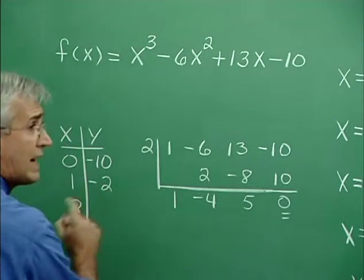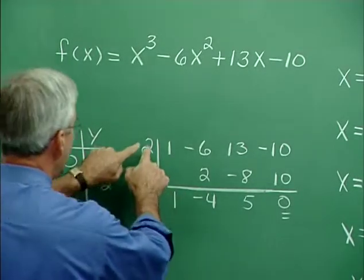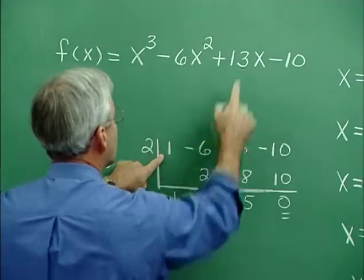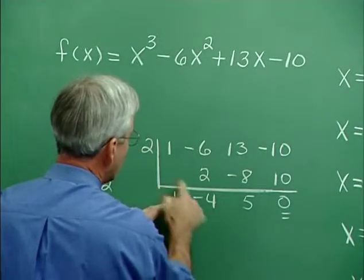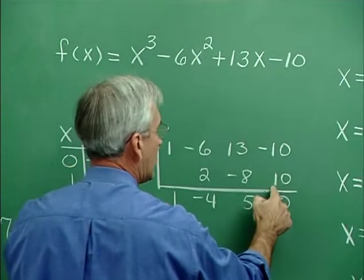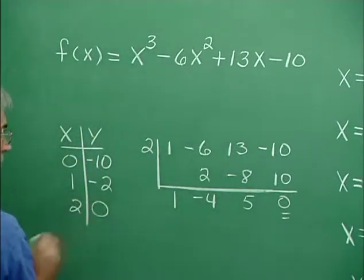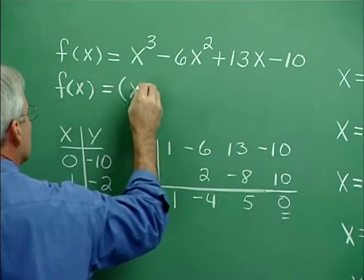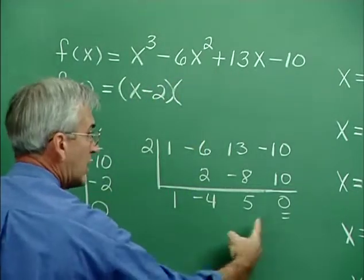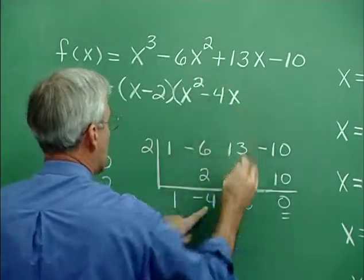Maybe we get some mileage by investigating at x = 2. Using synthetic division with 2 and coefficients 1, -6, 13, -10: bring down 1; 2×1 = 2, giving -4; 2×(-4) = -8, giving 5; 2×5 = 10, and with -10 gives zero. So we do indeed have a zero at x = 2, meaning (x - 2) is a factor. The leftover factor, read from the synthetic division row, is x² - 4x + 5.